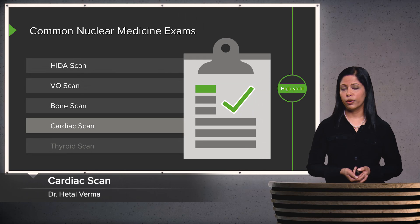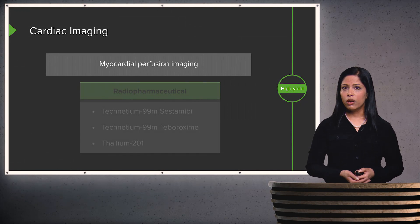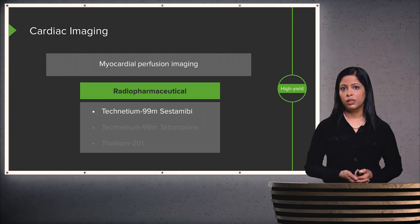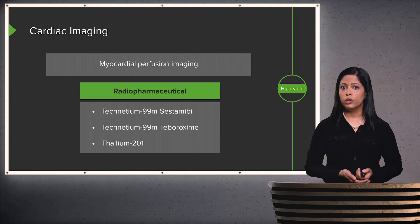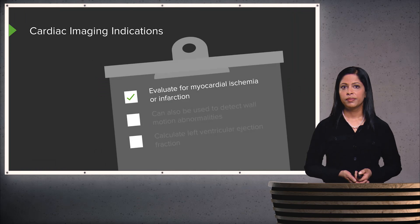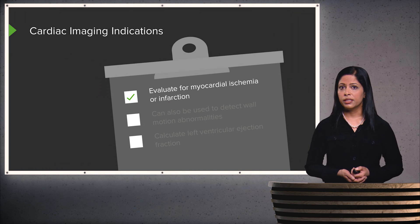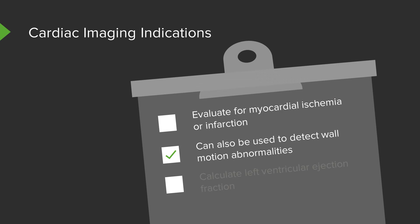Cardiac scans are also very commonly performed as a nuclear medicine examination. It's also called a myocardial perfusion scan or myocardial perfusion imaging. The radiopharmaceuticals used can be multiple — two of them are technetium-99 labeled, or we can also use thallium-201. Indications include evaluating for myocardial ischemia or infarction, detecting wall motion abnormalities, and calculating left ventricular ejection fraction.